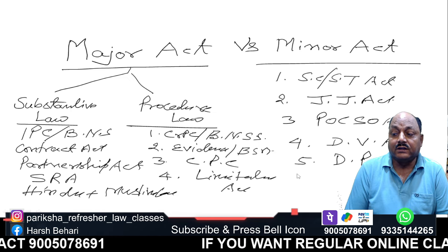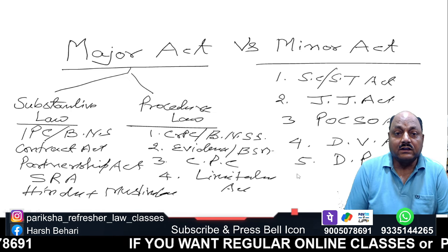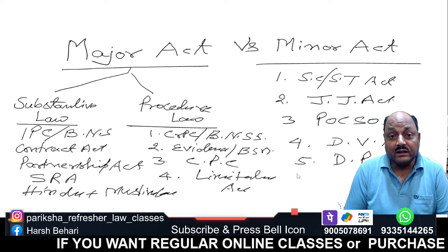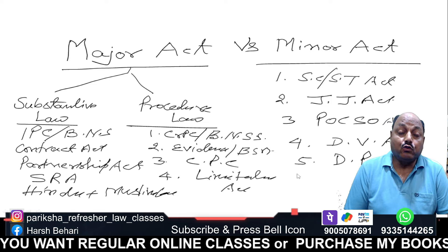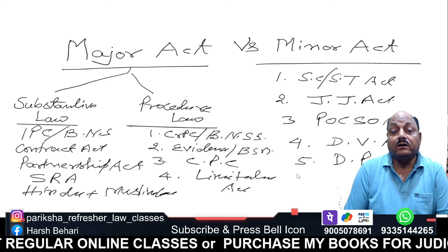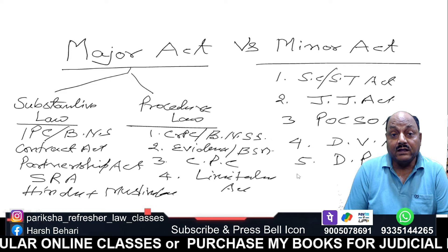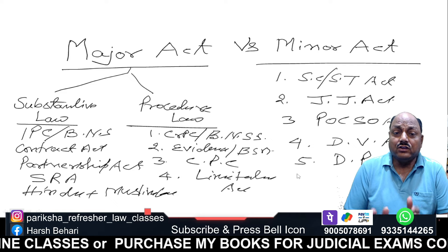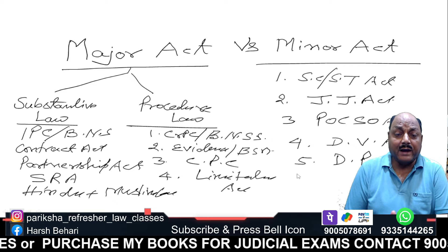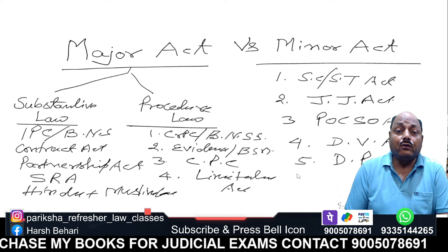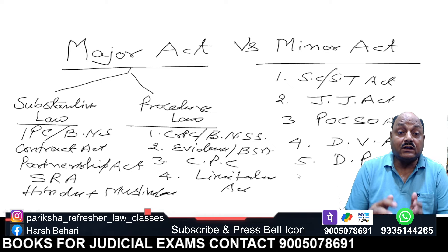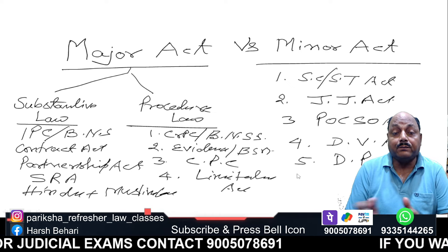POCSO Act, Dowry Provisions Act, Domestic Violence Act — these are all made for women's protection and sexual harassment in the workplace. So all the minor acts are made to make the major act more effective.